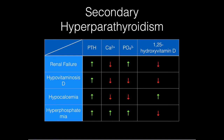First off, renal failure — the most common cause. Some people think it's the only cause, but that's not true. The primary abnormality is an inability to convert 25-hydroxyvitamin D to 1,25-hydroxyvitamin D. Remember, 1-alpha-hydroxylase is found in the cells of the PCT. In renal failure, this lack of vitamin D decreases both calcium and phosphate since vitamin D absorbs both from the kidneys and GI tract. But there's also a second derangement: the kidneys can't excrete phosphate anymore, so the body retains it. That's in addition to low vitamin D — two separate things happening simultaneously.